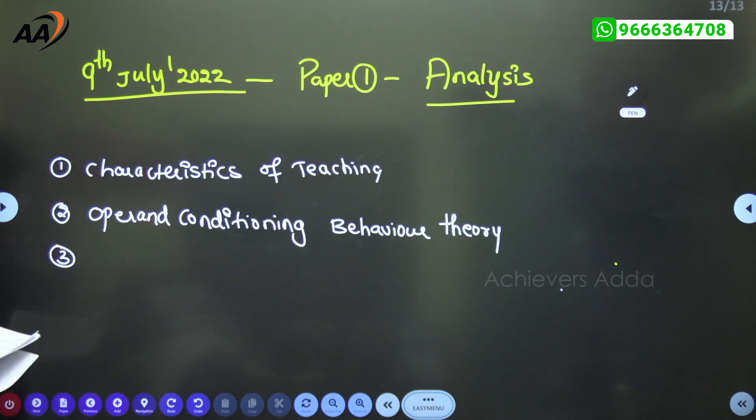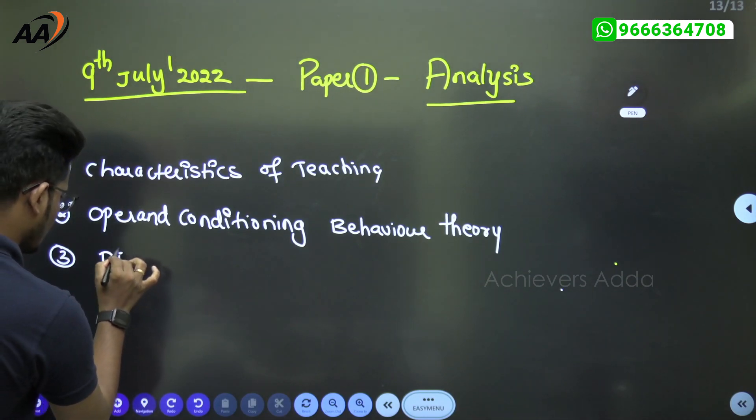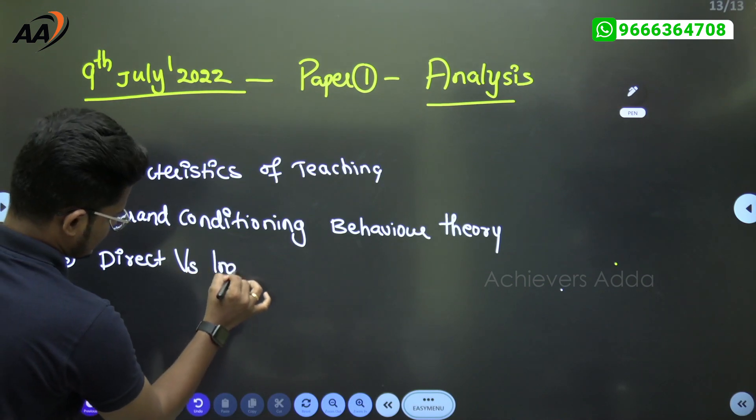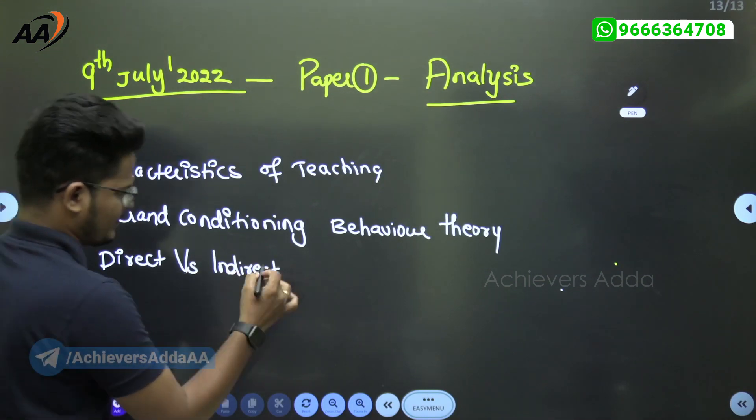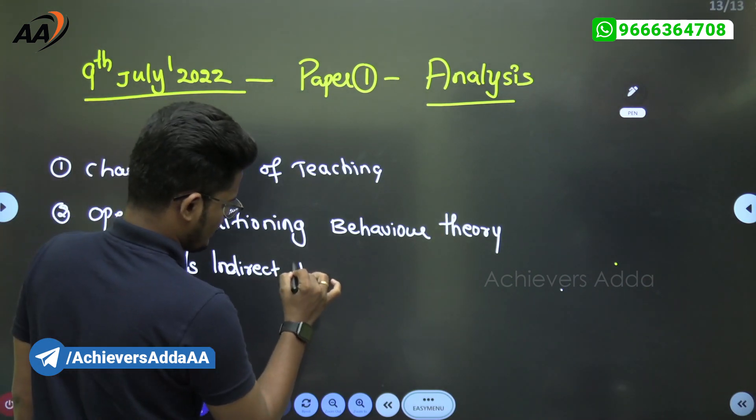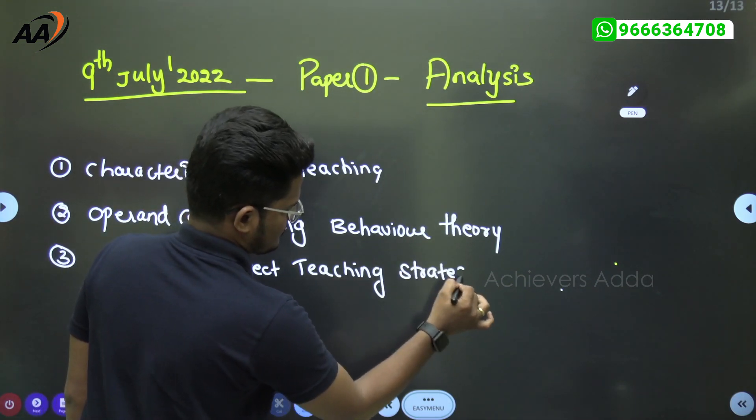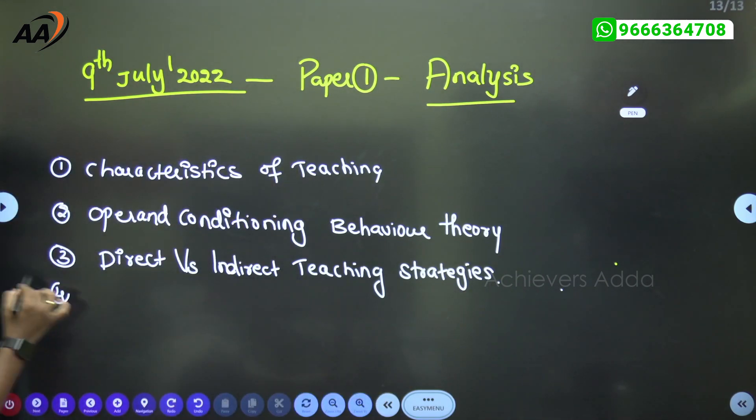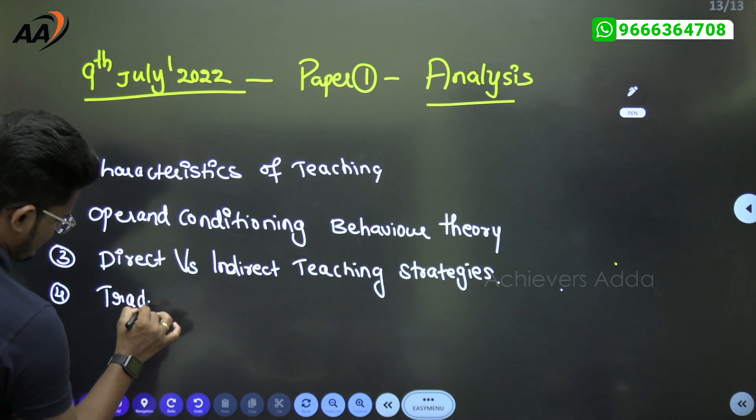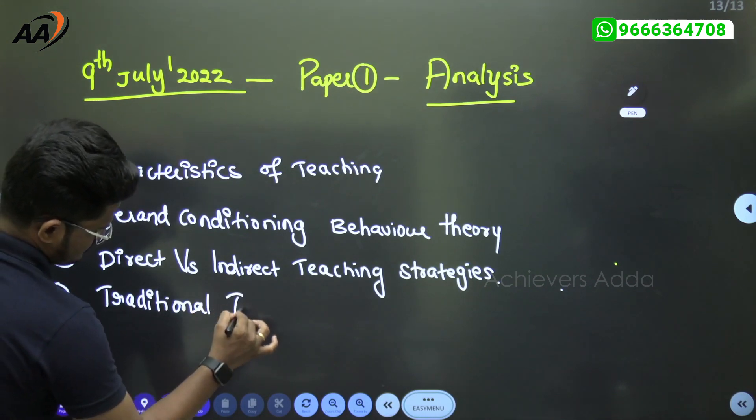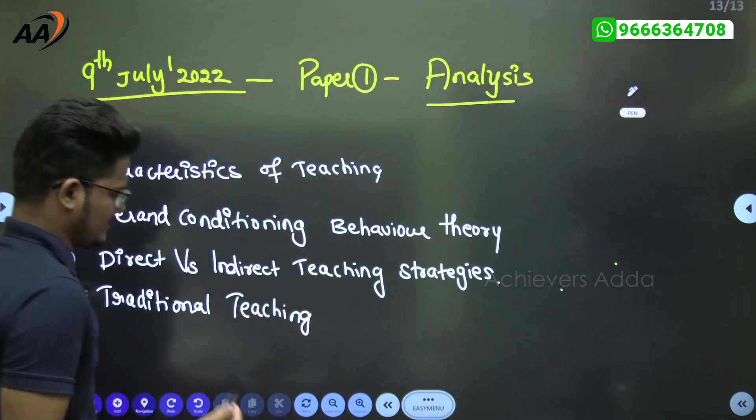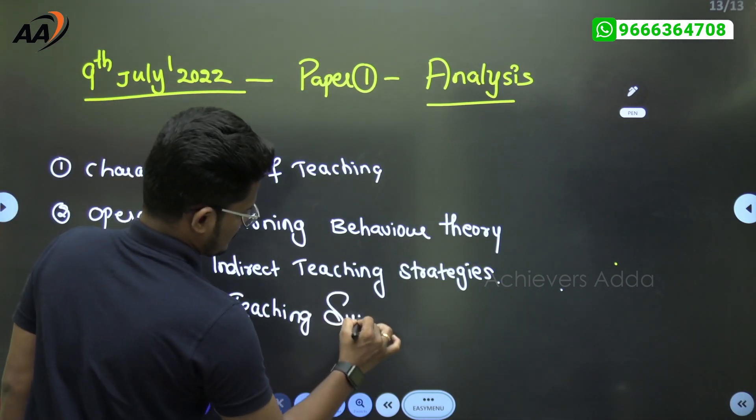Third one: direct versus indirect teaching strategies. This is a previous year question of 2021, same question repeated. Fourth question: traditional teaching support system related question has been asked.